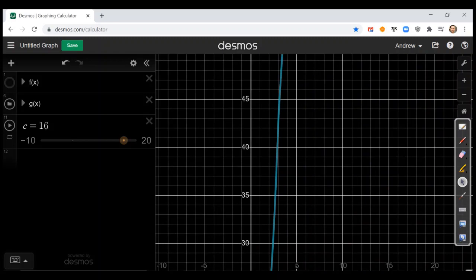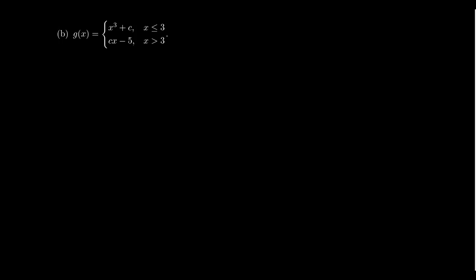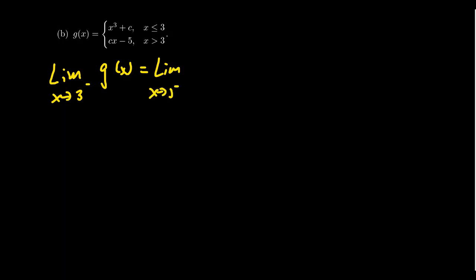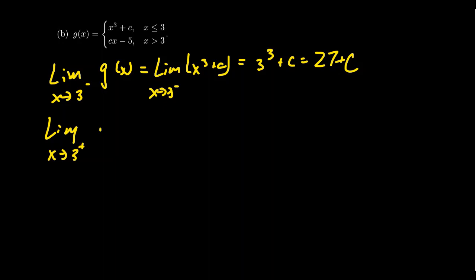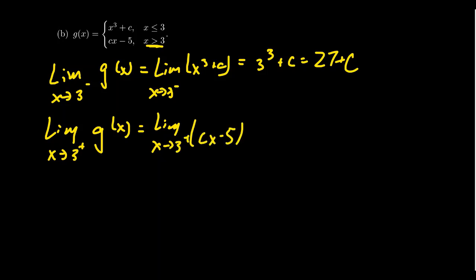Going back to the algebra, which is much more reliable, let's solve this algebraically. We need to compute the left-handed limit as x approaches three from the left of g(x). If you are a little bit less than three, you're on the piece x³ plus c. The limit as x approaches three from the left of x³ plus c — since it's a polynomial, we use direct substitution — gives us 3³ plus c, that is 27 plus c. For the right-handed limit, being a little bigger than three puts us on cx minus five, giving us the limit of cx minus five at x equals three, which is 3c minus five.